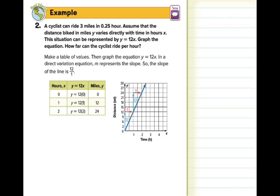Let's look at example two. A cyclist can ride 3 miles in .25 or a quarter of an hour. Assume that the distance biked in miles, y, varies directly with the time in hours, x. The situation can be represented by y equals 12x. Graph the equation. How far can the cyclist ride per hour? So they want us to graph this equation y equals 12x. So the first thing we're going to do is create a table. And it tells us here, make a table of values, then graph the equation. In a direct variation, m represents the slope, so the slope is 12 over 1. So if we make a table, I'm just picking times. Zero hours, one hour, two hours. So this is your choice. We're plugging it in. You've done these function tables a million times, and coming up with our answer. So what they did was they plotted each ordered pair. 0, 0, 1, 12, 2, 24.